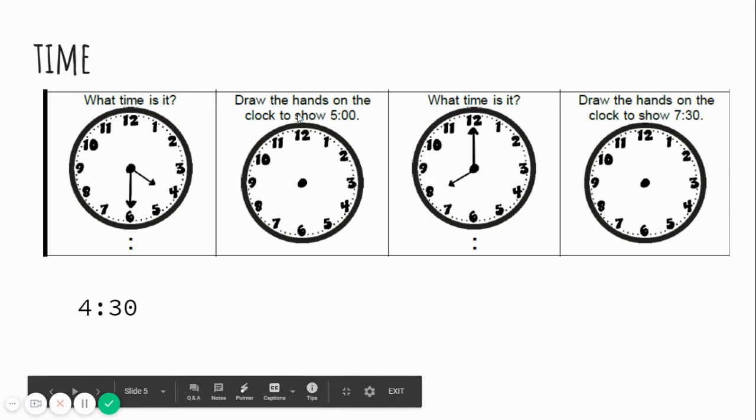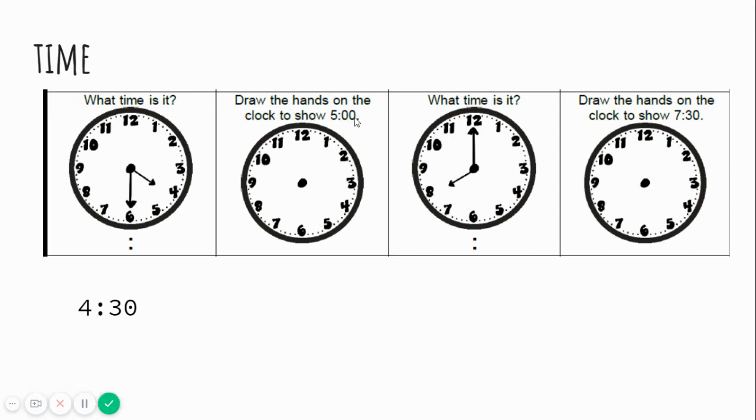Draw the hands on the clock to show five o'clock. We want to have the hour hand on the five and the minute hand on the twelve. That represents five o'clock.